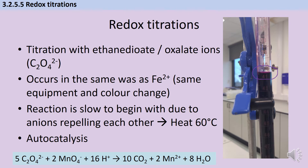The reaction with oxalate ions is initially slow because both oxalate and manganate ions are negatively charged, so they repel each other. From collision theory, particles need to collide with sufficient activation energy, but repulsion makes this unlikely. However, this is an example of an autocatalytic reaction — the Mn²⁺ ions produced catalyze the reaction between the two anions. To make the reaction feasible in a reasonable time, we also heat the solution to 60°C before the titration.